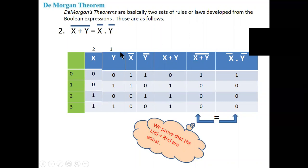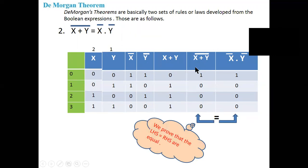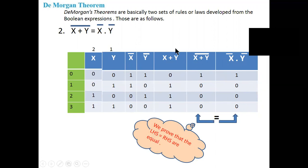I am finishing quickly because of time and video size constraints. x plus y: 0+0=0, 0+1=1, 1+0=1, 1+1=1. Complement of x plus y whole bar: 1,0,0,0. Then x bar dot y bar: 1·1=1, 1·0=0, 0·1=0, 0·0=0 giving 1,0,0,0.